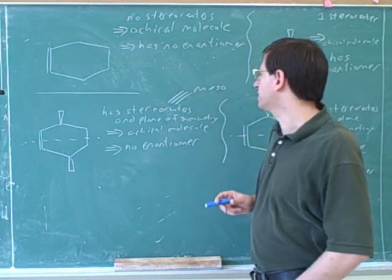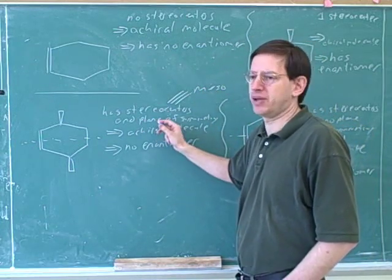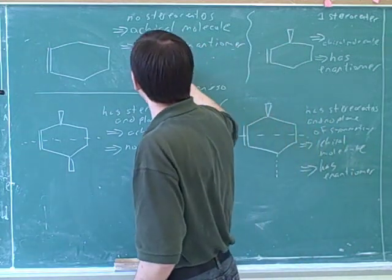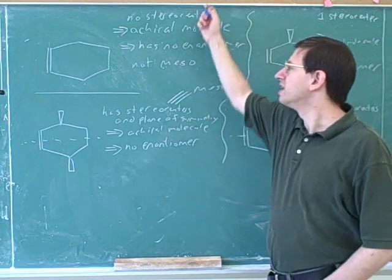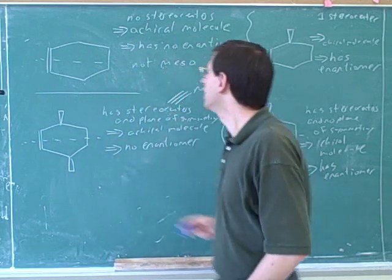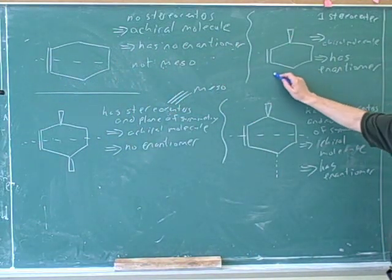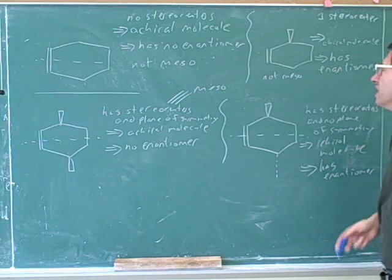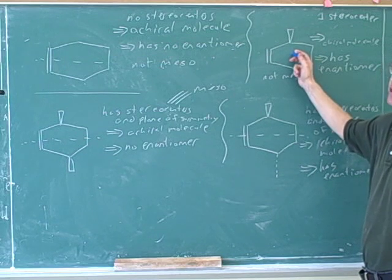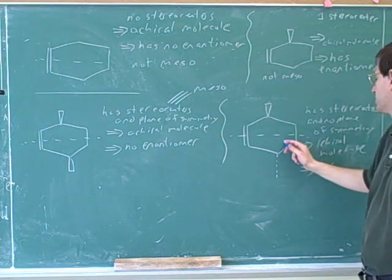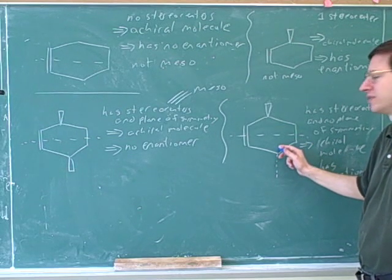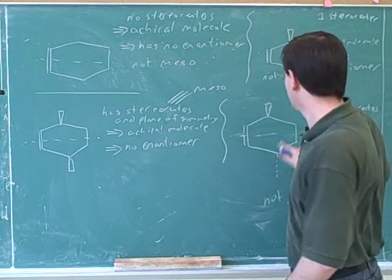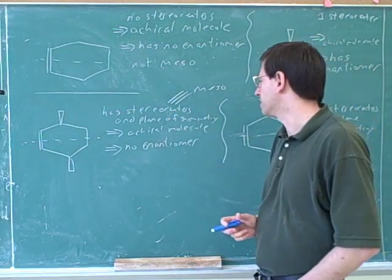So let's be very clear: meso means that you both have stereocenters and a plane of symmetry. Does this molecule qualify as meso? No — it doesn't have stereocenters. This actually does have a plane of symmetry, but who cares? It doesn't have stereocenters, so it's not meso. How about this molecule — is this meso? No. It does have a stereocenter, but it doesn't have a plane of symmetry. We could have predicted that because with only one stereocenter, there's no way to have a plane of symmetry. Is this molecule meso? No — it's missing a plane of symmetry. We tried to draw a plane of symmetry, but it failed. It's not really a plane of symmetry. So this is the definition of what it takes to be meso.